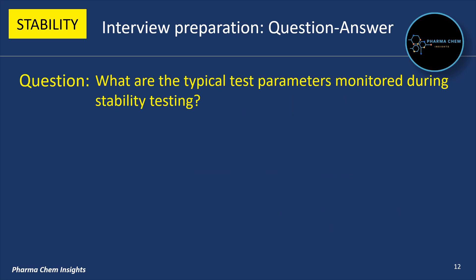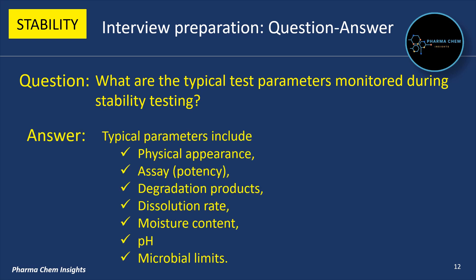Next question: What are the typical test parameters monitored during stability testing? Typical test parameters include physical appearance, color, assay, degradation products, dissolution rate, moisture content, pH, and microbial limits.